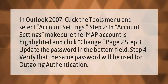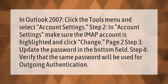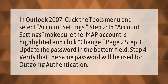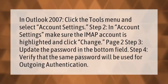In Outlook 2007, click the Tools menu and select Account Settings. In Account Settings, make sure the IMAP account is highlighted and click Change. Step 3: update the password in the bottom field. Step 4: verify that the same password will be used for outgoing authentication.